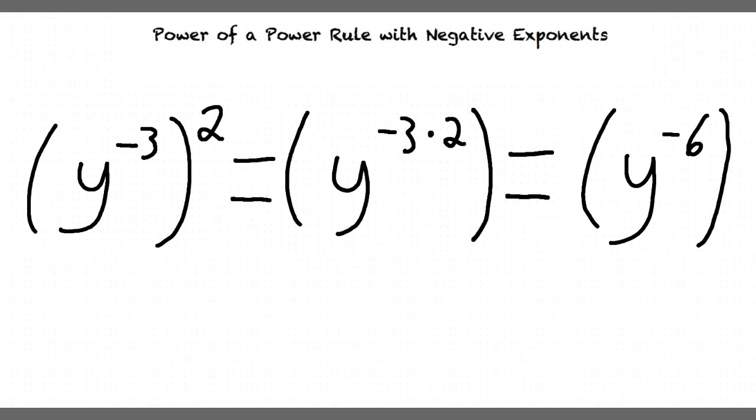However, can we simplify this further? Yeah, I know that our final answer can't have a negative exponent, but how do we simplify further?